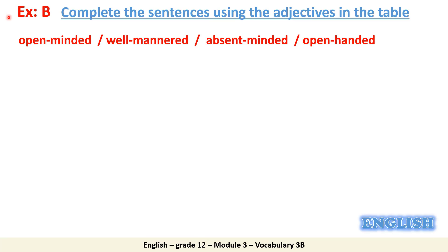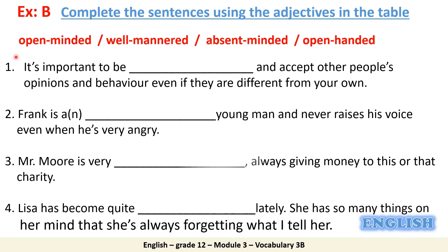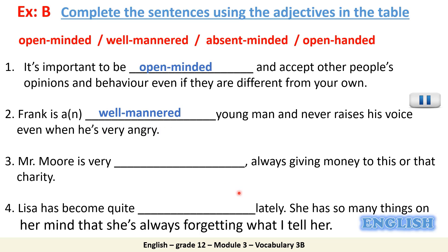Moving on to exercise B. There are eight compound adjectives and a number of statements — pause the video to answer. If someone accepts other people's opinions, we can describe this person as open-minded. Frank is a young man who never raises his voice — Frank is well-mannered. Someone giving money to different charities is open-handed, a generous person. Lisa is always forgetting what she's told, so Lisa is absent-minded.